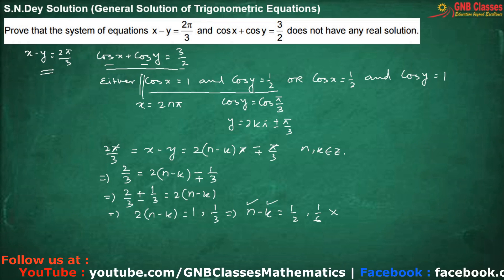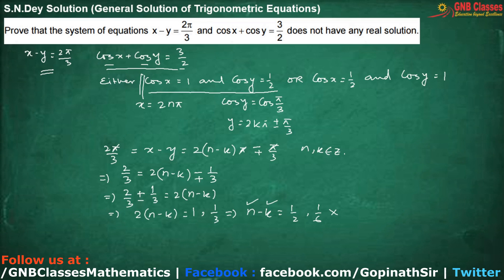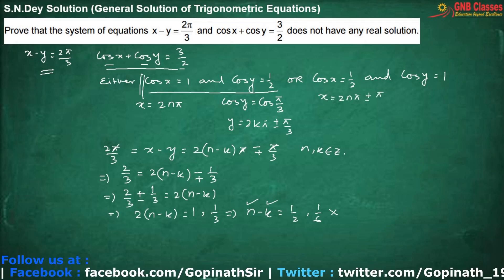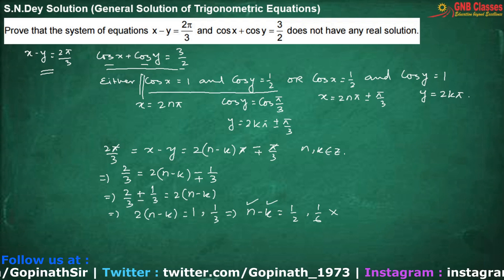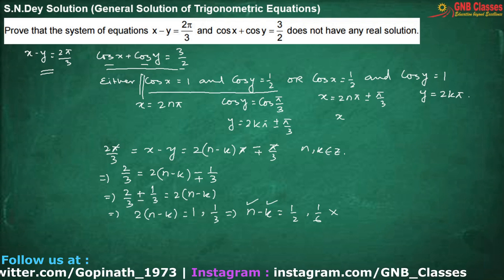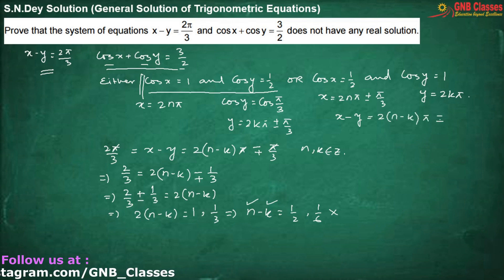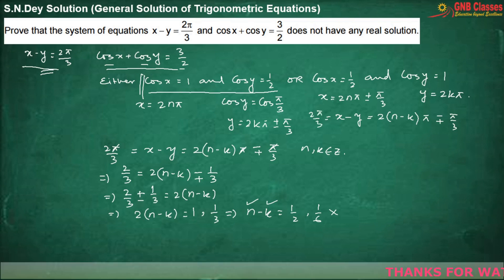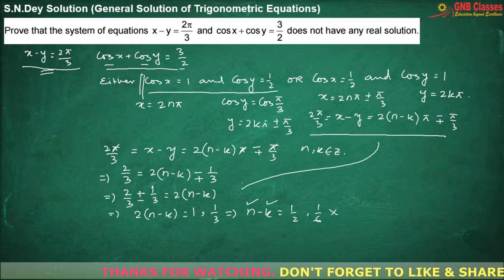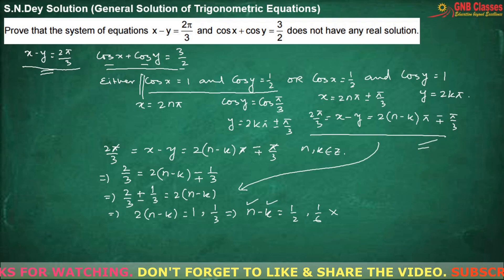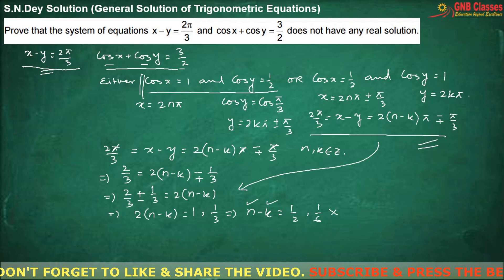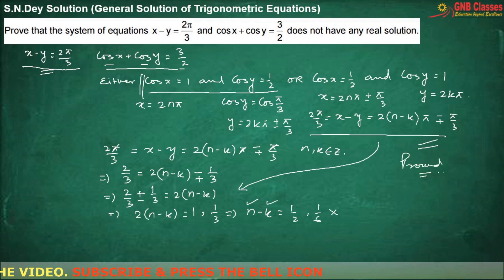In the second case, cos x = 1/2 and cos y = 1, you are going to get the same type of equation: x - y = 2π/3 leads again to an equation requiring n - k to be a fraction, which is impossible. So from this case also you are not going to get any real solution. Hence proved.